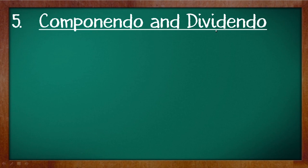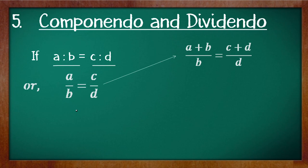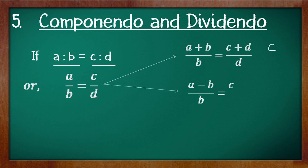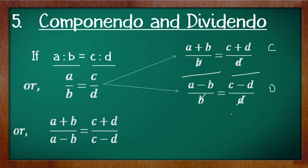Now the very important property: componendo and dividendo. Suppose we have the ratio a is to b equals to c is to d, written in fraction form. Applying componendo gives a plus b divided by b is equals to c plus d divided by d. Applying dividendo on the same fraction gives a minus b divided by b is equals to c minus d divided by d. Now dividing the componendo result by the dividendo result — b and b cancel, d and d cancel — giving us a plus b divided by a minus b is equal to c plus d divided by c minus d.